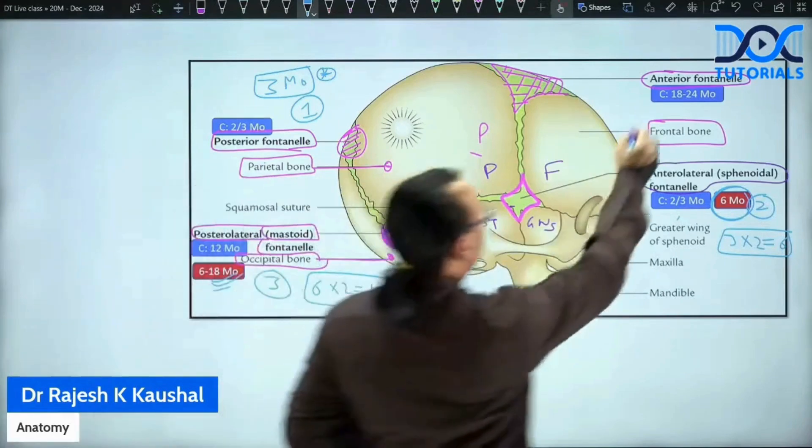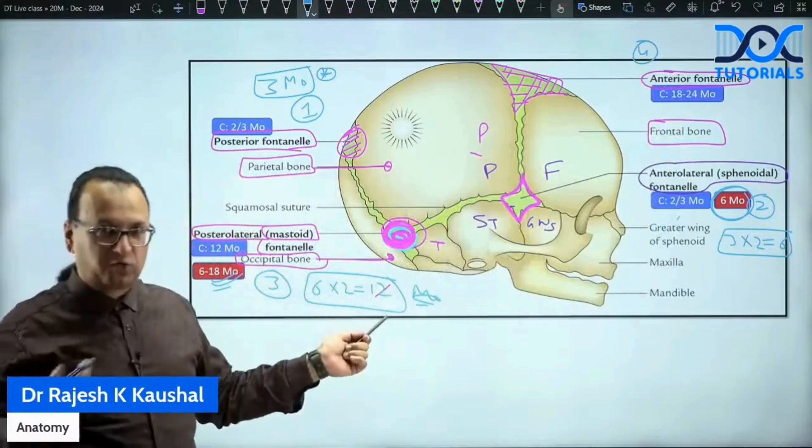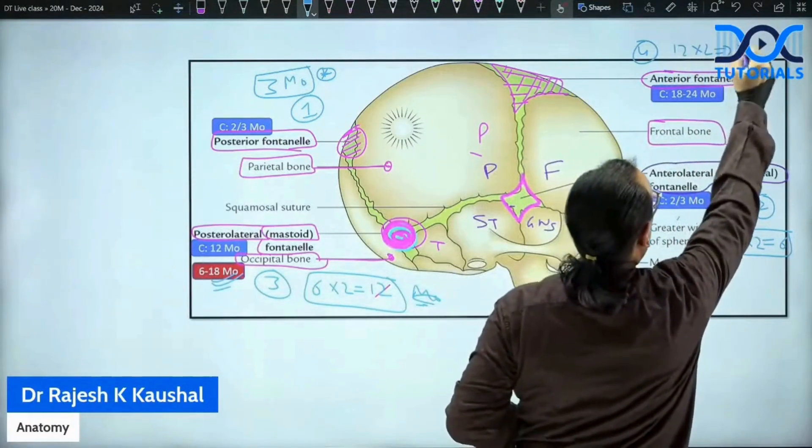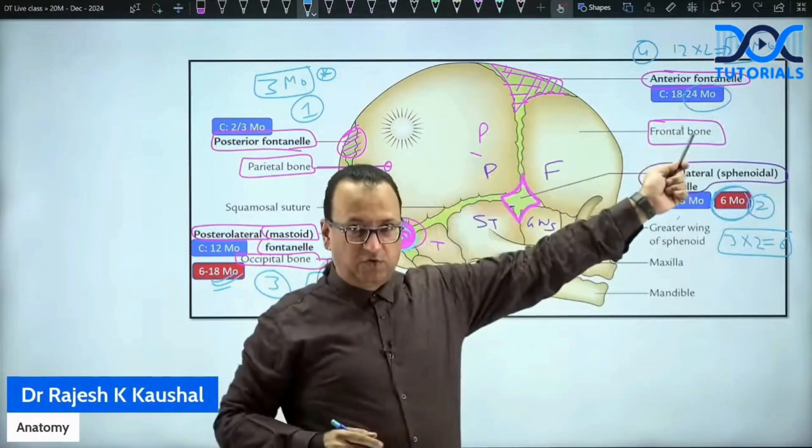Last one, fourth one, is the anterolateral fontanelle, and it is whatever you got here, twelve month into two. So twelve into two, that is twenty-four, twenty-four months. So it will be closing by twenty-four months, but then it is a range, eighteen to twenty-four.